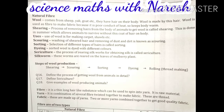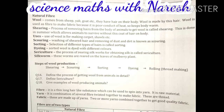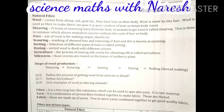These animals have hair on their body, and wool is made from the hairs taken from these animals. Wool is used as fiber to make fabric because it is a poor conductor of heat, which keeps the body warm in cold or winter conditions. Wool is a fiber taken from animals like sheep, yak, and goat.